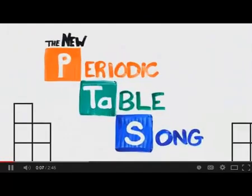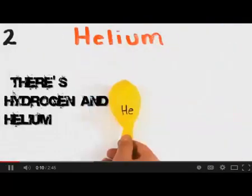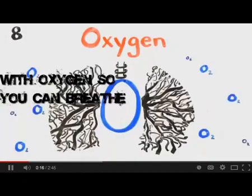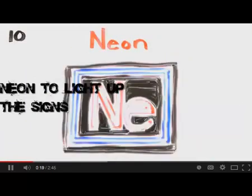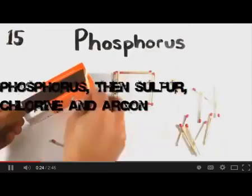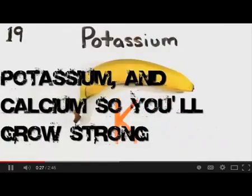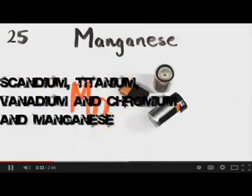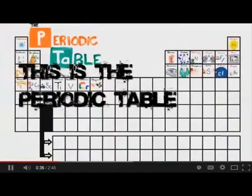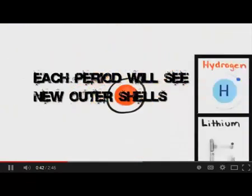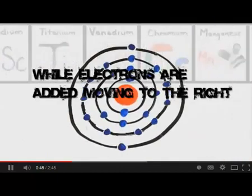And now, ASAP Science presents the elements of the periodic table. There's hydrogen and helium, then lithium, beryllium, boron, carbon everywhere, nitrogen all through the air, with oxygen so you can breathe and fluorine for your pretty teeth, neon to light up the signs, sodium for salty times, magnesium, aluminum, silicon, phosphorus, then sulfur, chlorine, then argon, potassium, and calcium, so you'll grow strong, scandium, titanium, vanadium, and chromium, and manganese. This is the periodic table, noble gases stable, halogens and alkali react aggressively. Each period, we'll see new outer shells, while electrons are added, moving to the right.